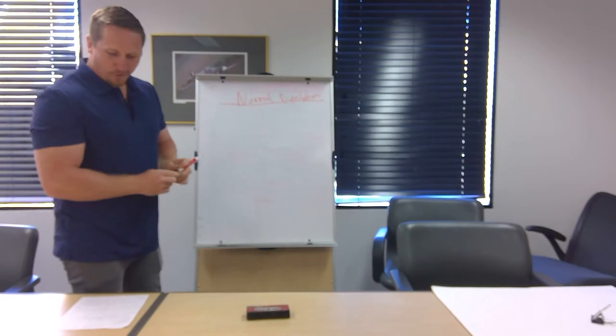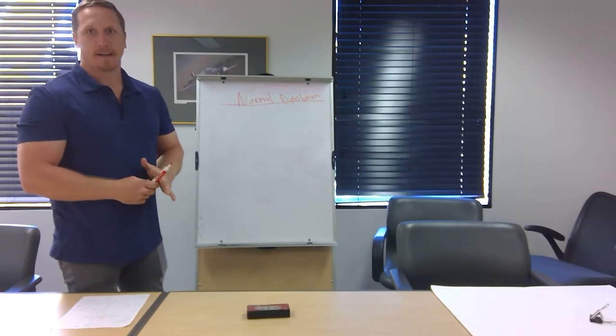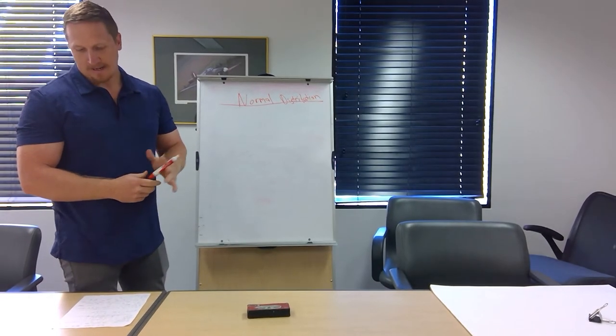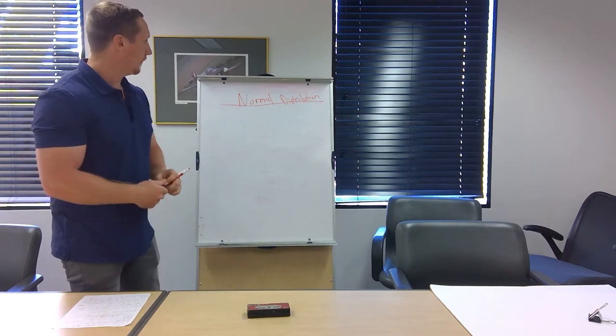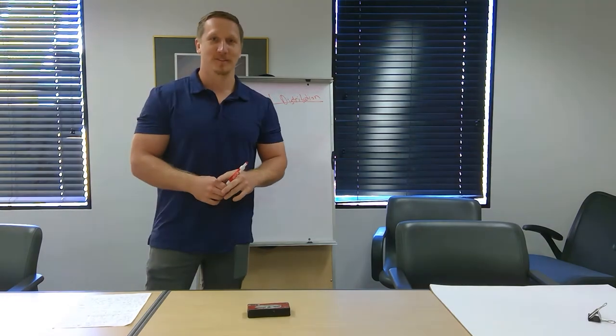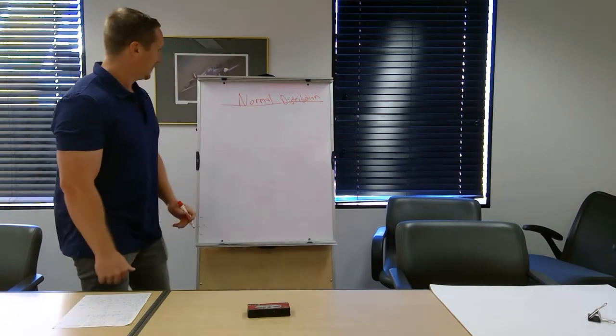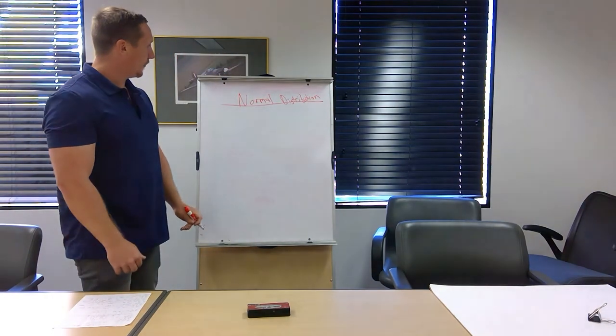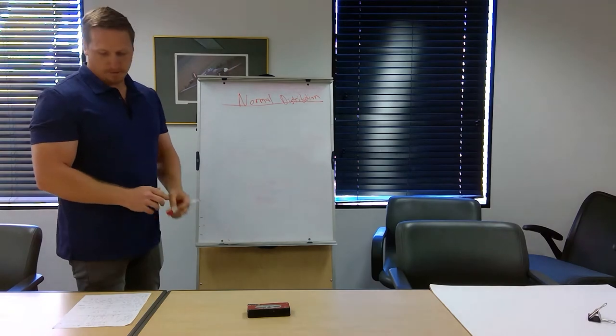So we'll learn today about the 68, 95, and 99.7 rule of a normal distribution, and if we have time, we'll learn about positively skewed distributions and negatively skewed distributions. So we'll start first with the normal distribution.